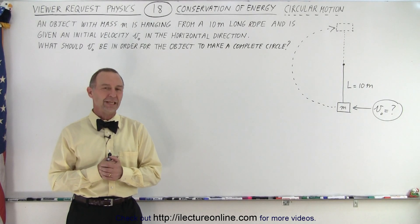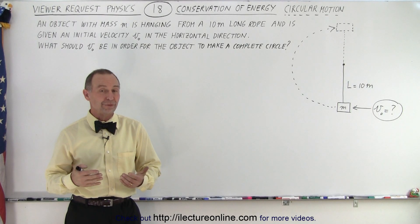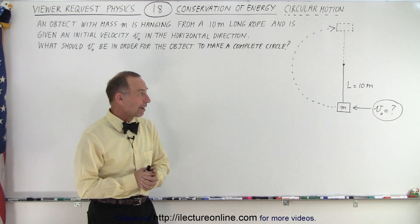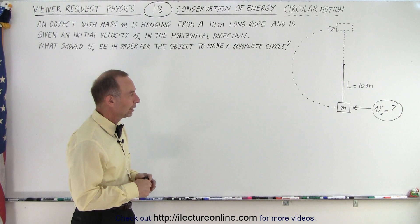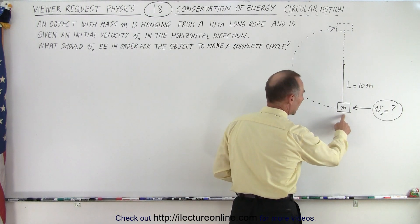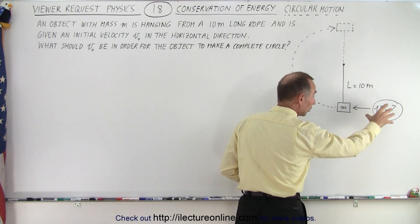Welcome to iLecterOnline. Here's another very interesting problem from one of our viewers. We have an object that's hanging from a 10 meter long rope. The object is given a sufficient amount of initial velocity and that's what we're looking for.